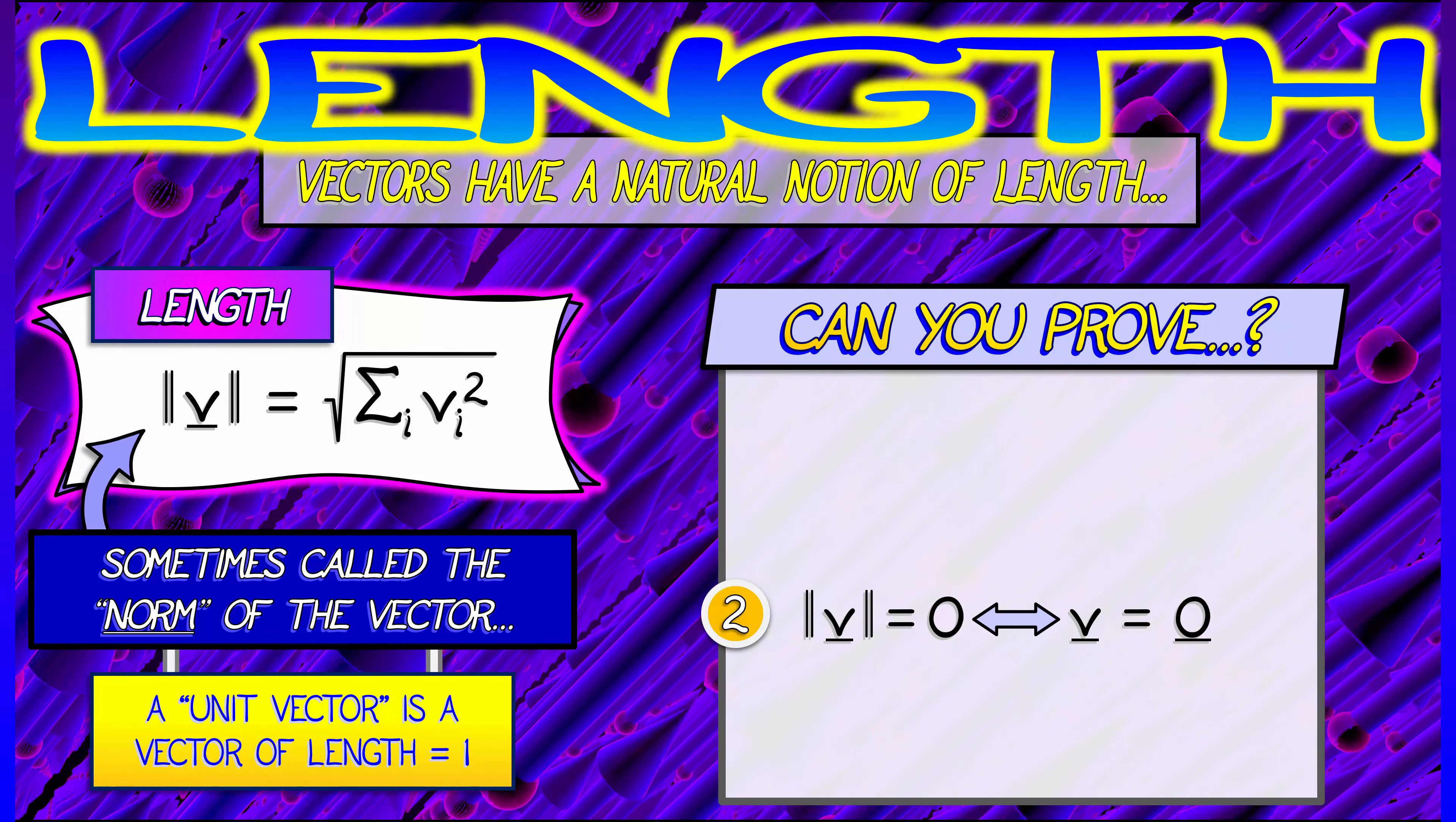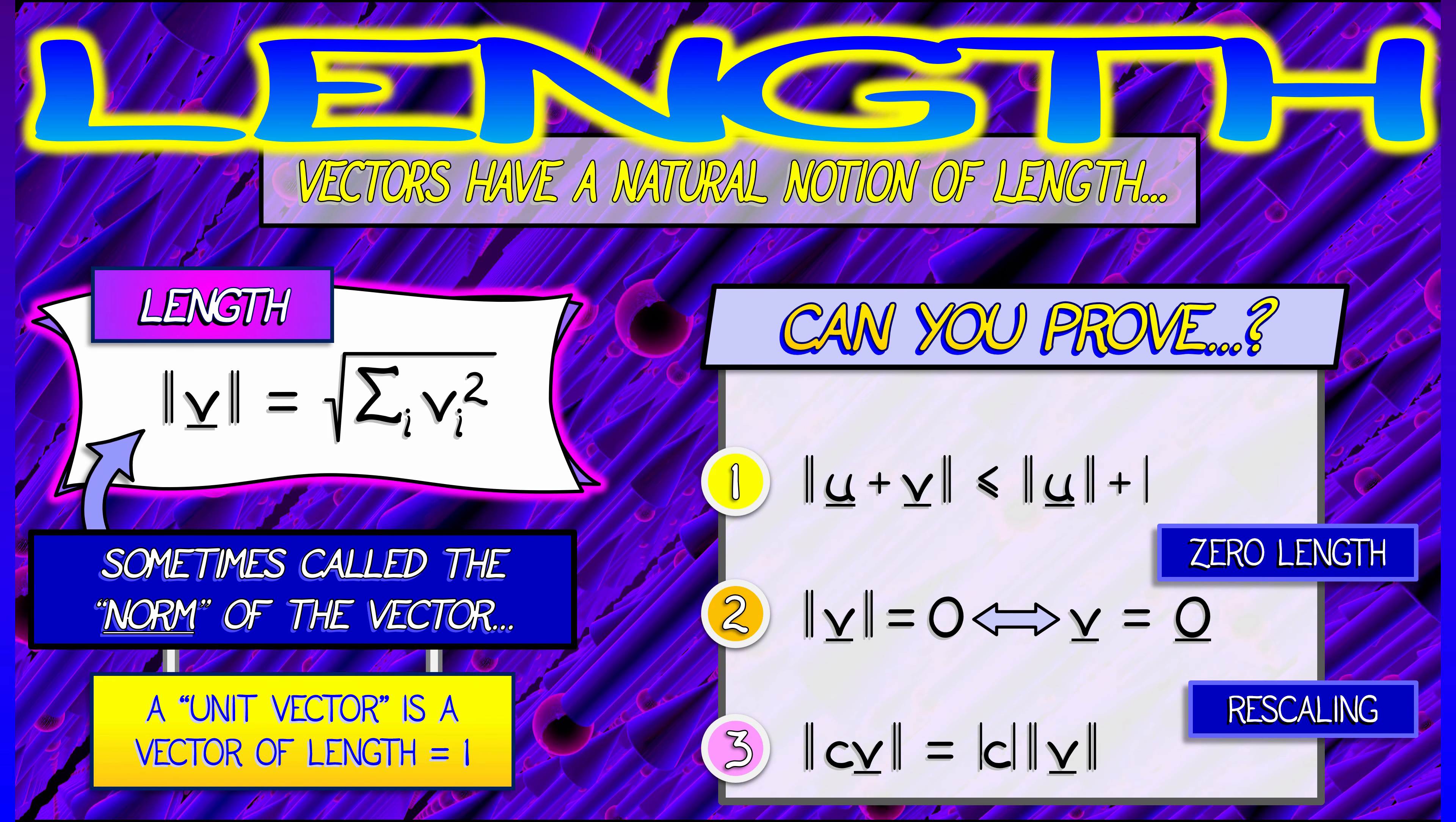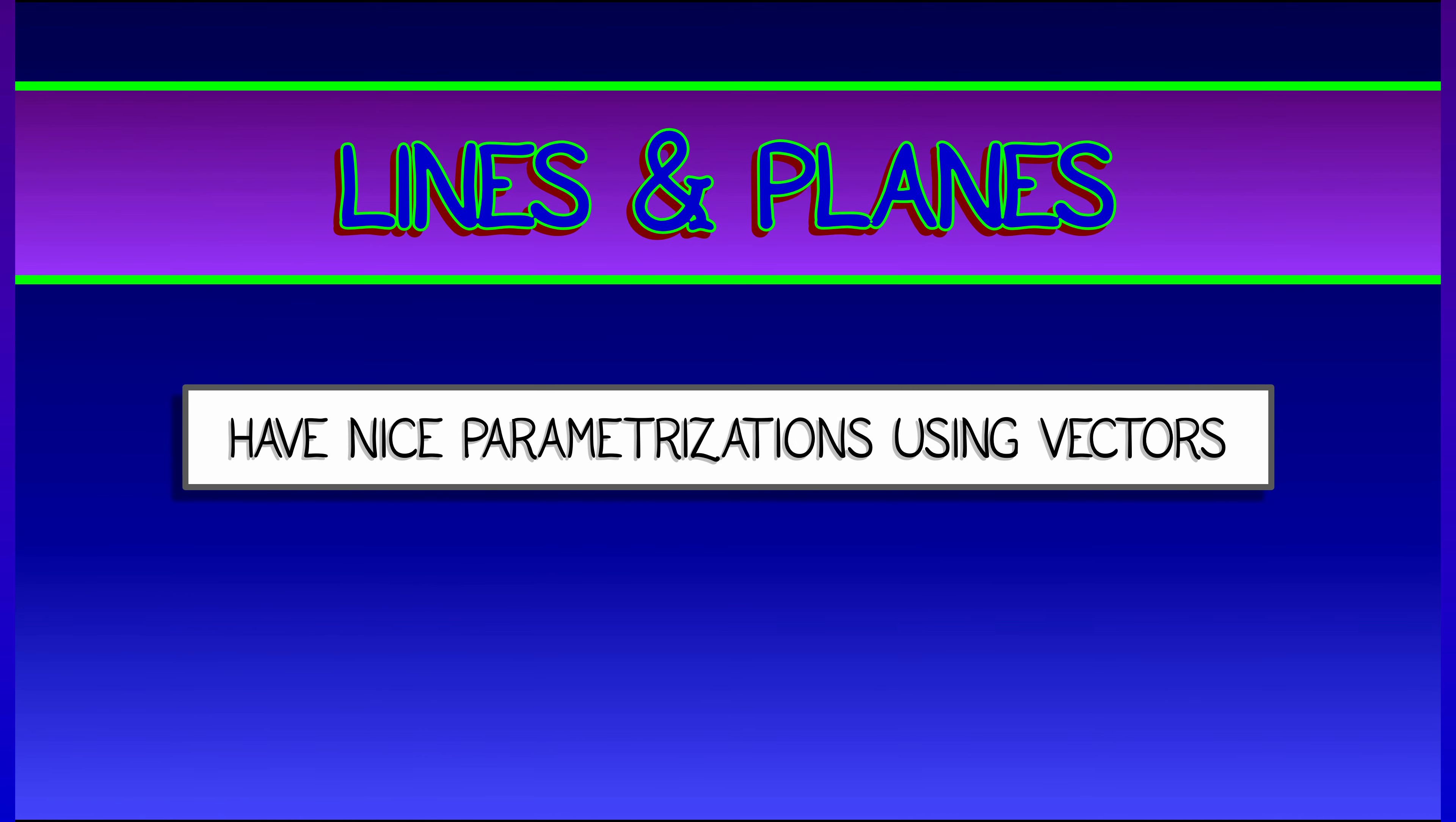Can you prove these based on the definition? I'll start with fact number two, because it's easier to prove. A vector has length zero if and only if it is the zero vector. Next, if you rescale a vector v, then its length changes by a factor of what you rescaled it by in absolute value. Both of those are things you should be able to prove with a little work. But the first and most important fact is harder. This is called the triangle inequality, and it says that the norm of u plus v is less than or equal to the norm of u plus the norm of v. See if you can prove that. Here's a hint: it's called the triangle inequality.